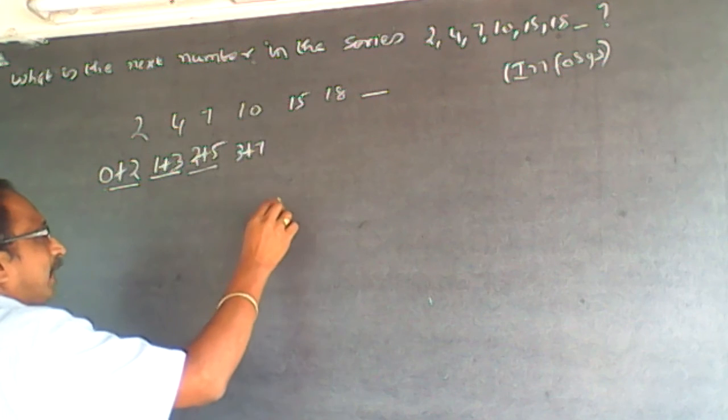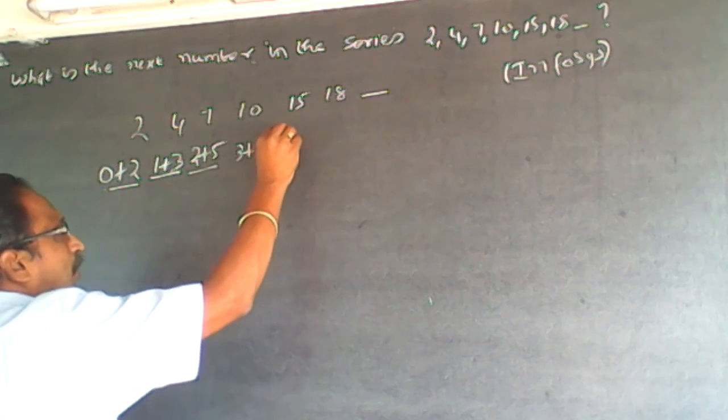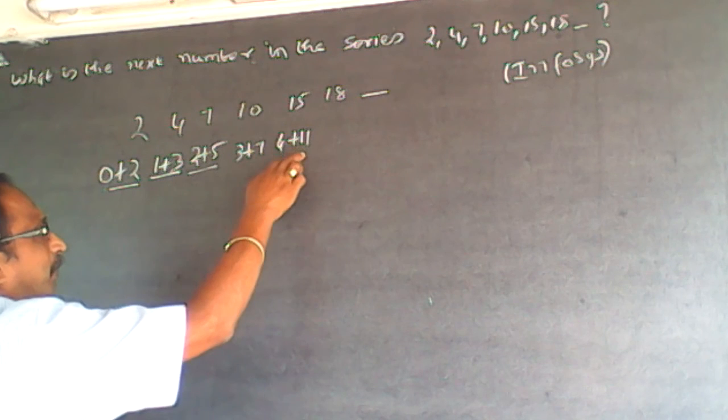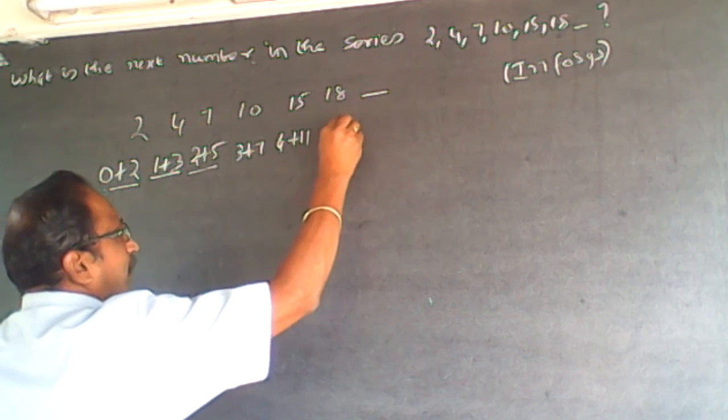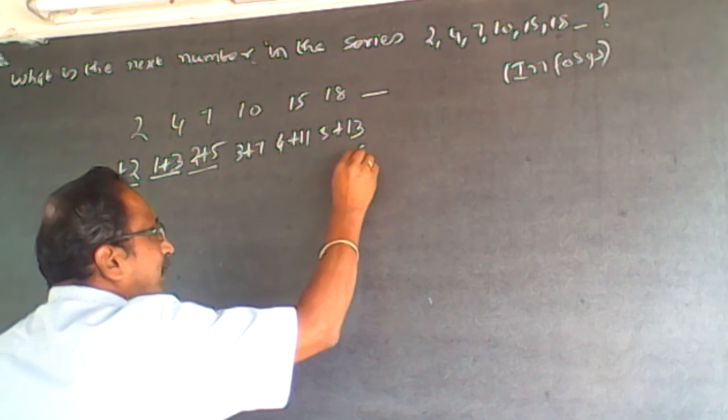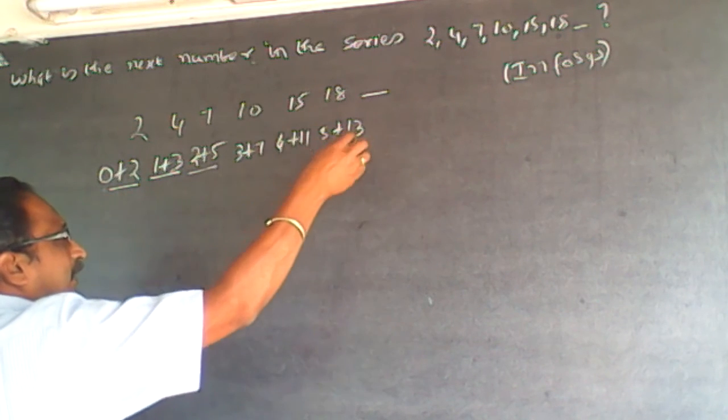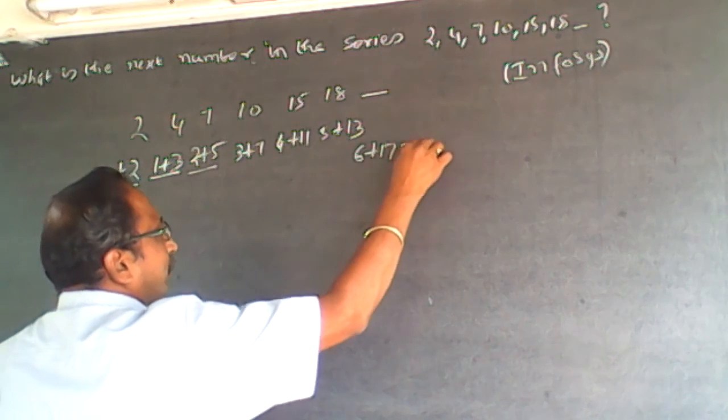So 3 plus 7 is 10. Then it will be 4 plus 11. Next number after 7, prime number is 11. 5 plus 13. Now what I want is, it is 6. The next prime number after 13 is 17, will be equal to 23.